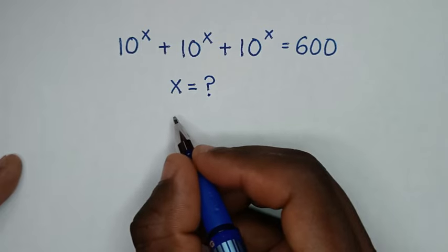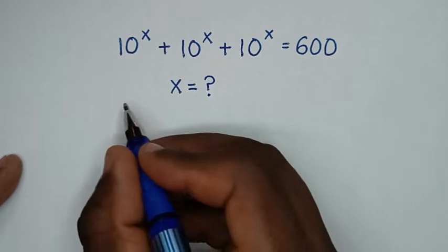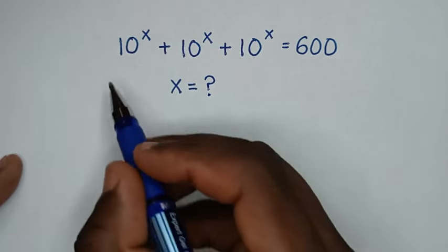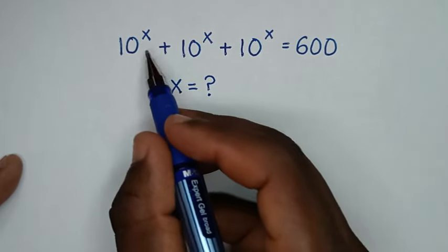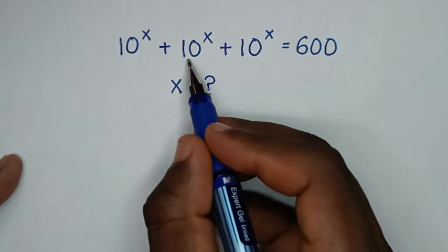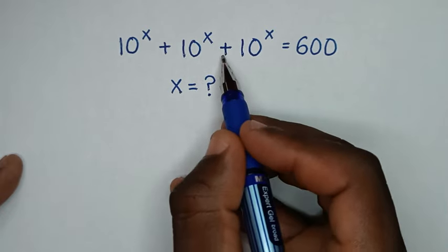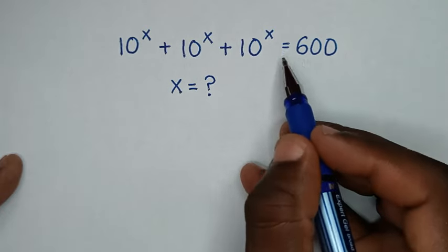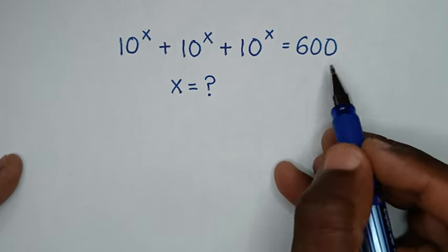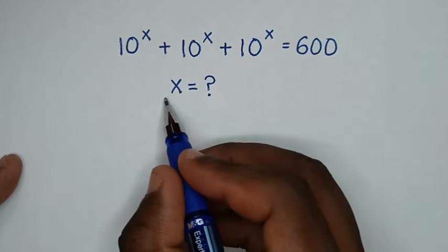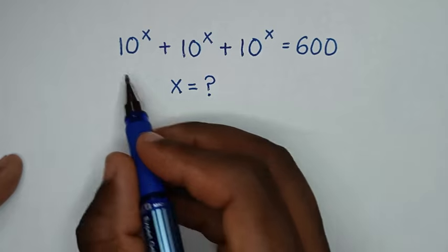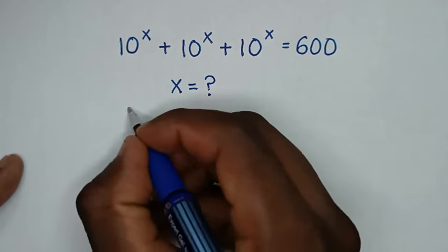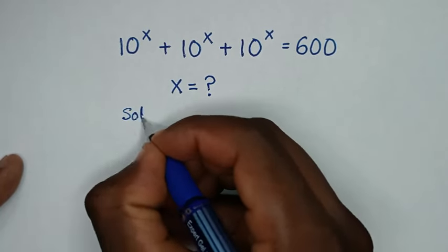Hello, you are welcome. We will solve this math problem: 10 power x plus 10 power x plus 10 power x is equal to 600, to find the value of x from this equation.